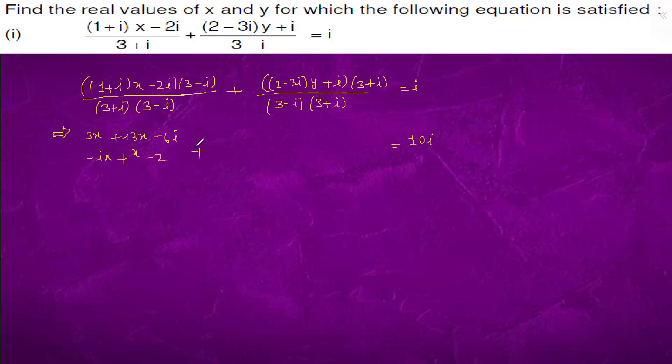And we have here 6 minus 9 iota y plus 3 iota plus 2 iota y. So we have 3y plus 2y minus 9, giving us 5y minus 9.